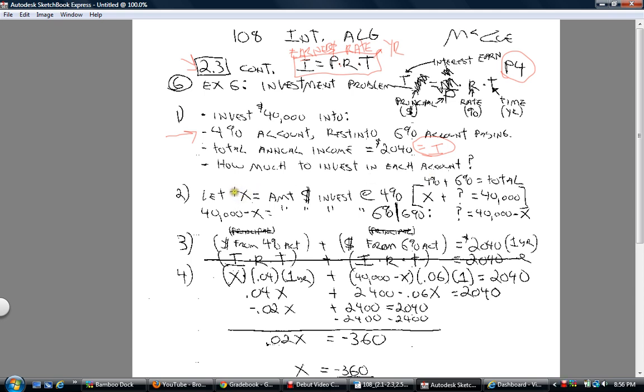So what I did was I let X equal the amount of money invested at the 4%. Now, that is how much you're going to put in here. Now, the hard part now is how much would you invest in at the 6% account? And so what I did over here was here's X is how much you're going to put in. You don't know what it is, but you've got a total of $40,000 to put in. So if you say X plus a question mark, now this is a little unconventional algebra work, but if I told you to isolate the question mark, what would you do to isolate it? You would subtract X on both sides.